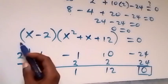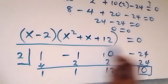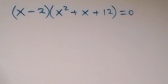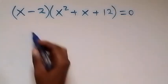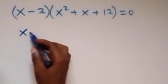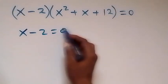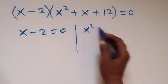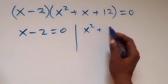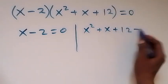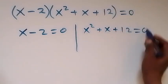The other factor has coefficients which form a quadratic: x squared plus x plus 12. Solving the full equation gives two possible cases: x minus 2 equals to 0, or x squared plus x plus 12 equals to 0.